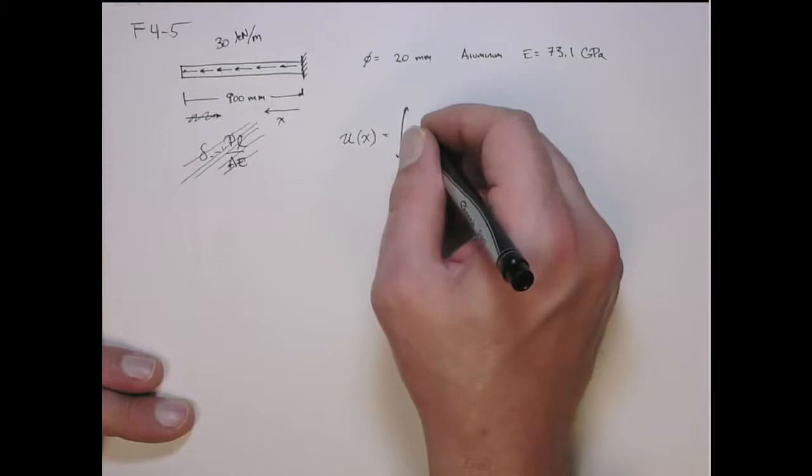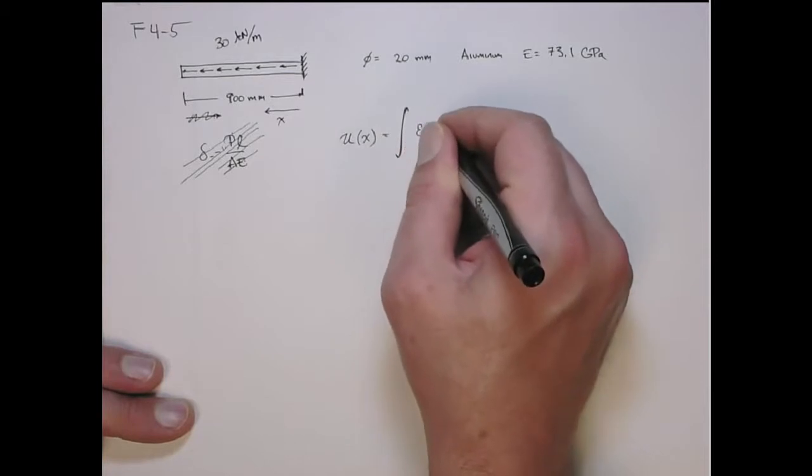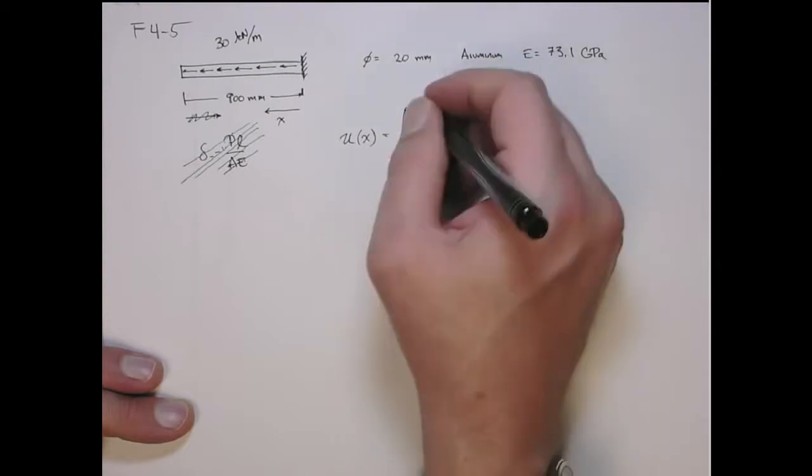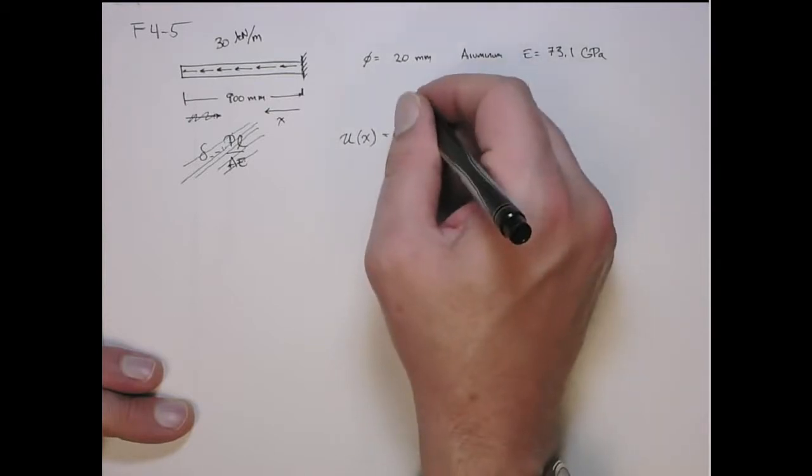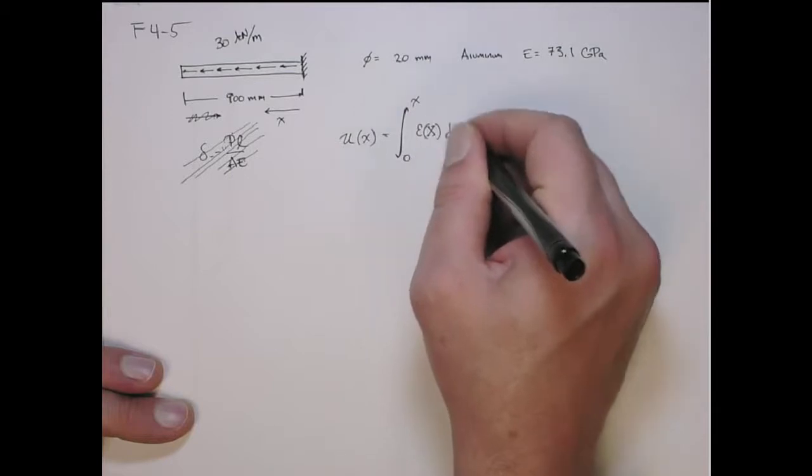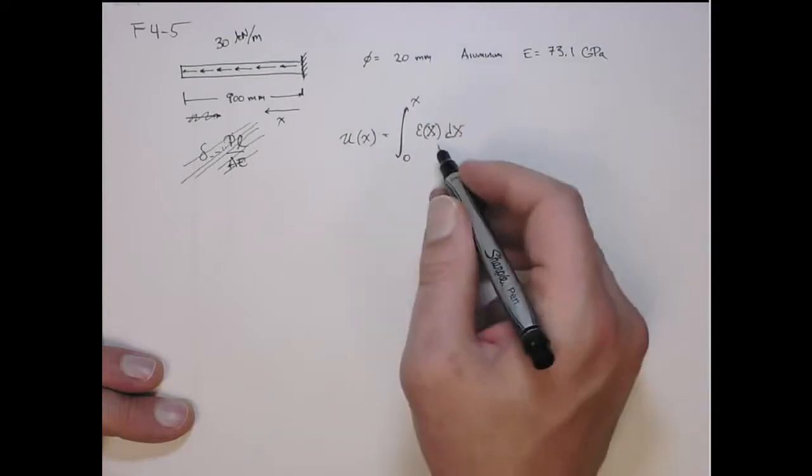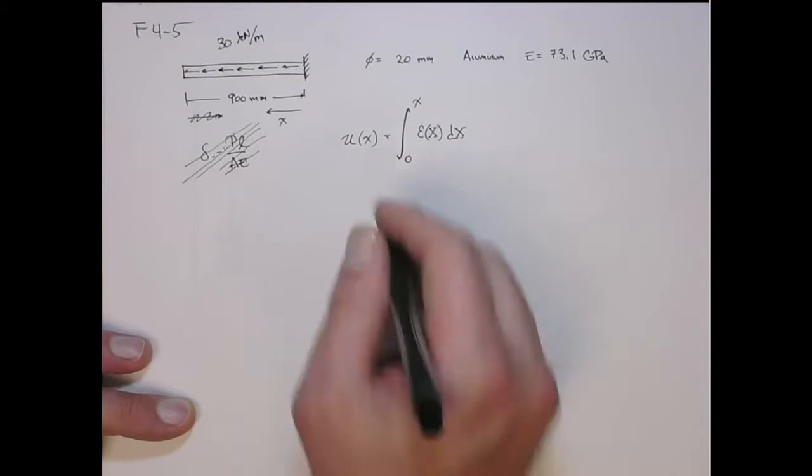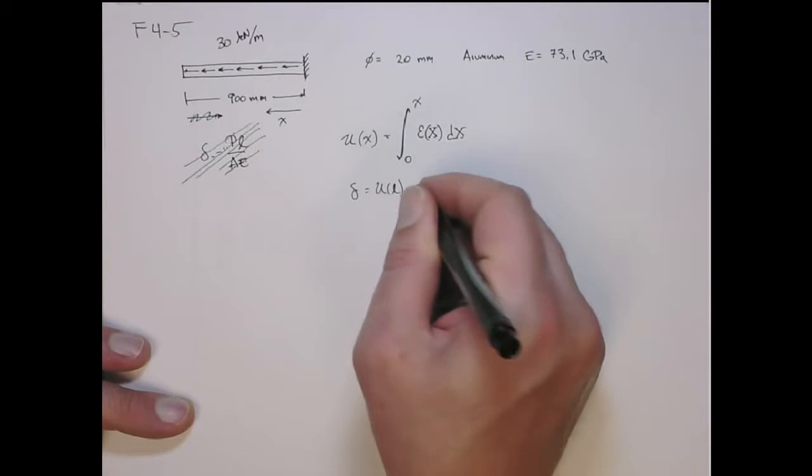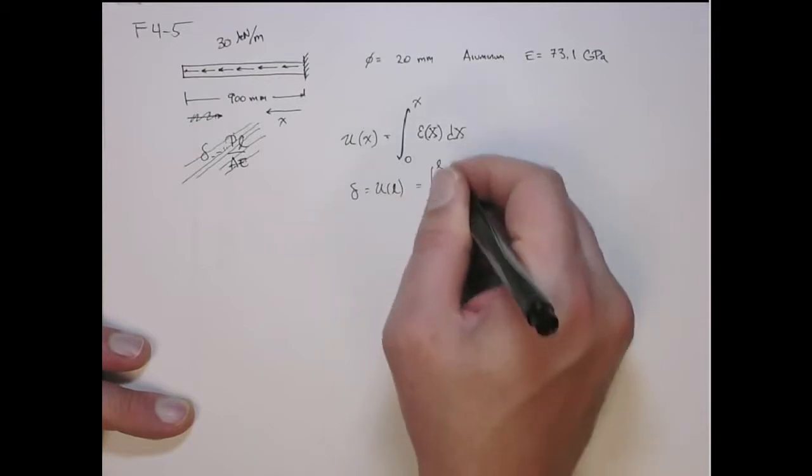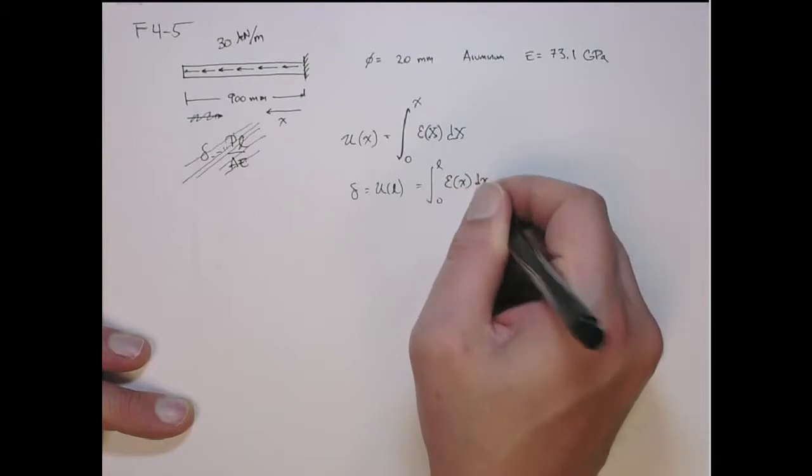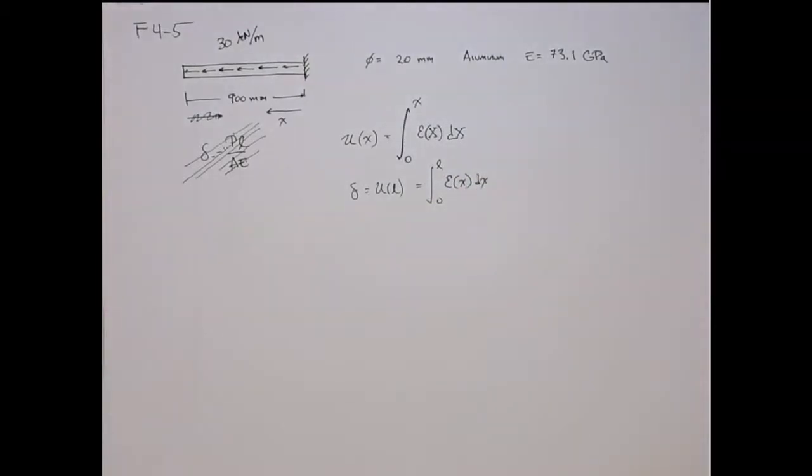This is the integral of the strain from 0 to x, and we have to use a dummy variable of integration here. This is the general equation, or if you want to get the elongation which is the displacement at the length, that's the integral from 0 to L of the strain. That's the equation we're going to use.